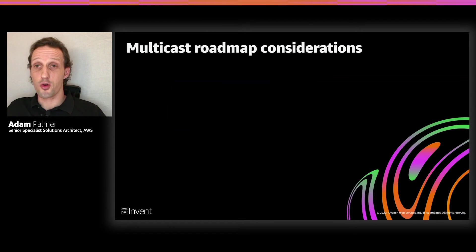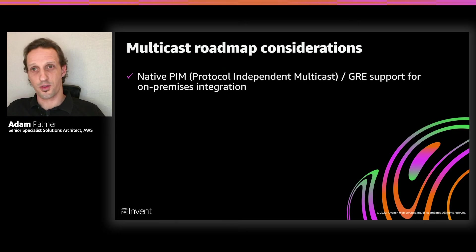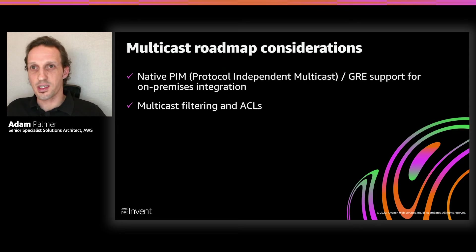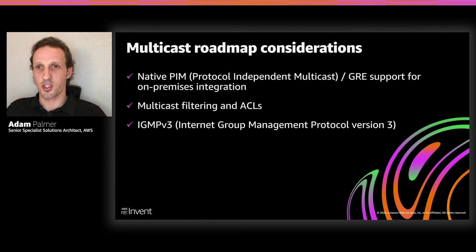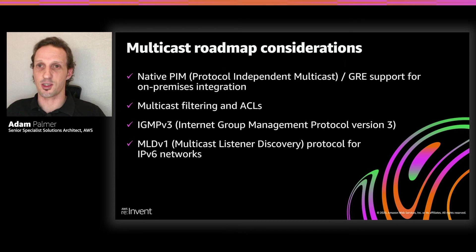What are some of our multicast roadmap considerations? We saw earlier that there are ways to create hybrid integrations between native multicast on AWS and existing data centers. We'd like to offer this capability natively without the requirement to deploy multicast-capable or tunneling virtual routing instances. Additional control over filtering and access control lists around multicast domains is also being considered. IGMP version 3 — which has enhancements around source-specific multicast, allowing recipients to choose which stream they receive information from — is on our roadmap. And not forgetting IPv6 with MLD version 1.